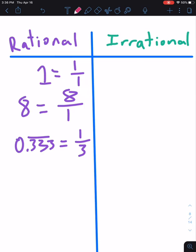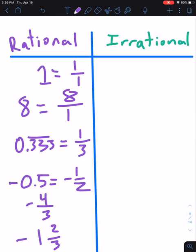And rational numbers can also be negative. So if you have the number negative 0.5, it's the same as negative 1 half. That's also a rational number, just like negative 4 thirds. Or even negative 1 and 2 thirds. It's the same as negative 5 thirds. My bad, I meant 5 thirds.